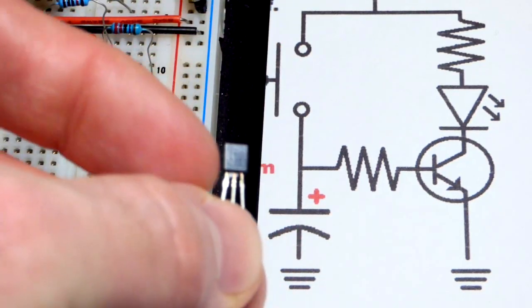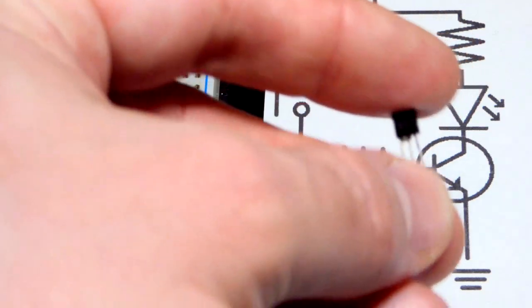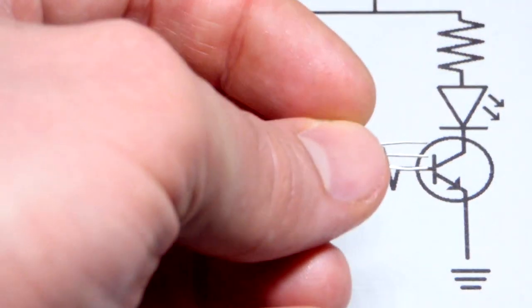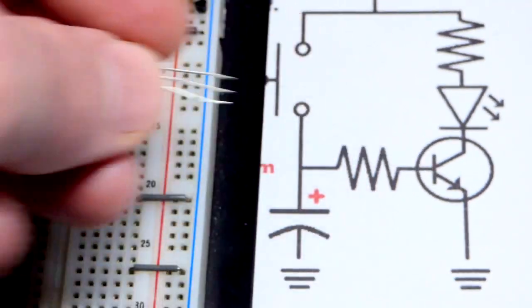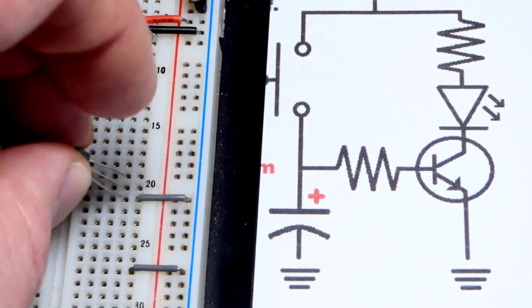So looking at the flat side, emitter is the left pin, base is the middle pin, and collector is the right pin. If I turn it this way, it's lined up like you see on the schematic right there.